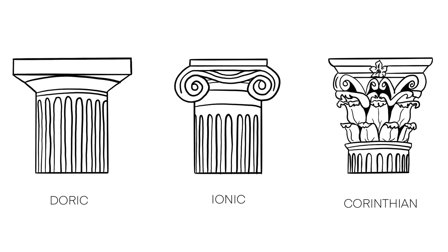The Doric order is the simplest, characterized by sturdy columns with plain capitals. The Ionic order features more delicate columns with spiral-shaped volutes on their capitals. The Corinthian order, known for its ornate and leafy capitals, represents the most decorative and intricate form of classical architecture.